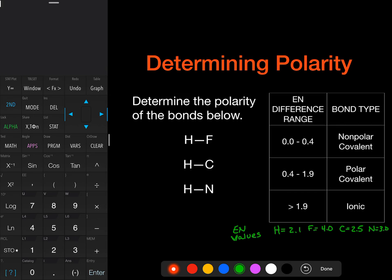And so we want to find the difference. So for the first one, we're going to take our 4.0 for fluorine. So we take the bigger number minus our 2.1. And we get an electronegativity difference. So 4.0 minus 2.1, and we get a difference of 1.9. So when we look at this, we find that 1.9 is going to fall into this category right here. So this would be polar covalent.